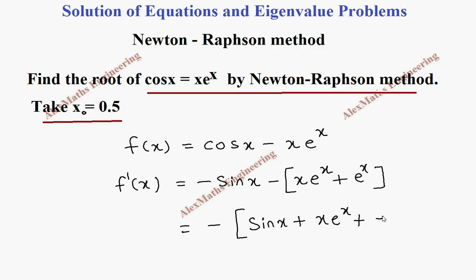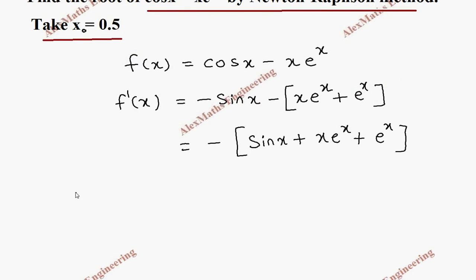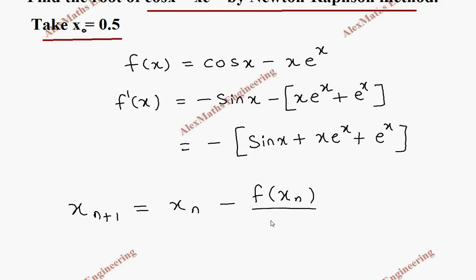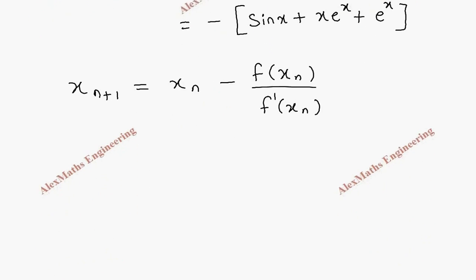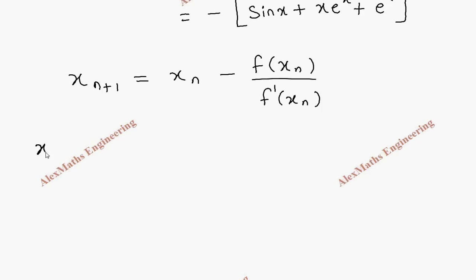Using Newton's formula, the iterative scheme is x_{n+1} = x_n - f(x_n) / f'(x_n). In the question we are given x₀ = 0.5, so now we proceed to find x1.